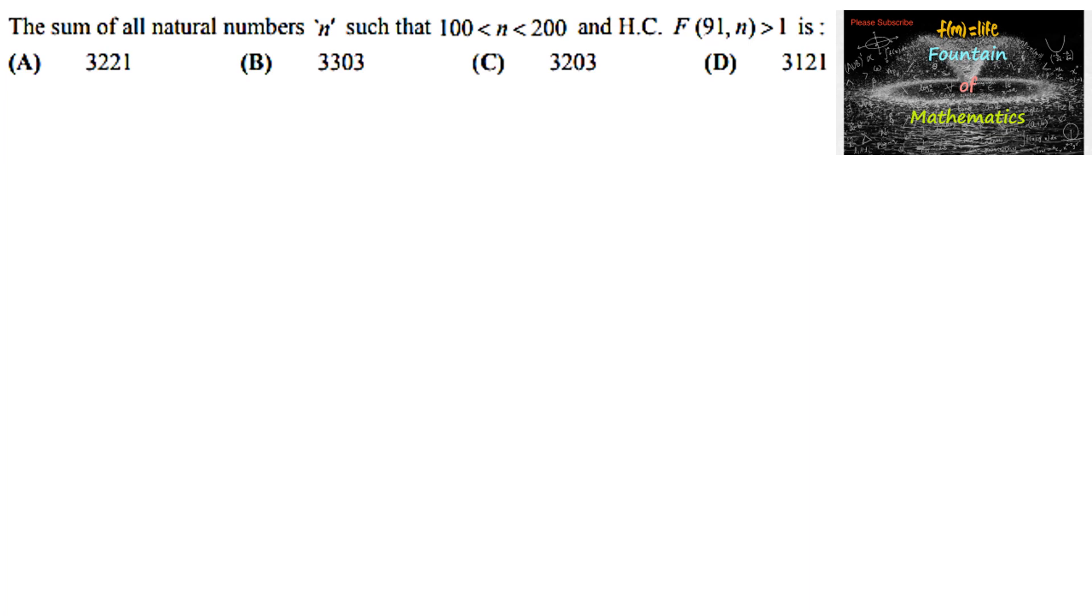We need to find the sum of all natural numbers n such that 100 < n < 200, where n is a natural number and HCF of 91 and n should be greater than 1. So if 91, we can say 91 is equal to 13 into 7.